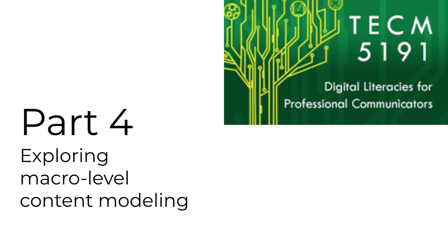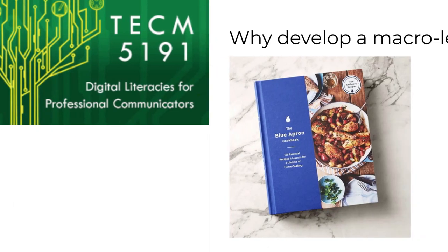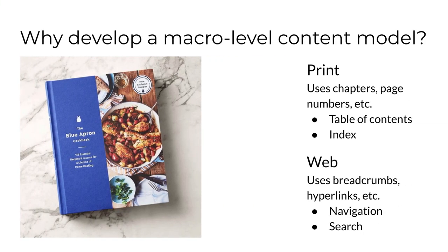Having well-structured individual topics is only part of the structure you need to develop for your content. In Part 4, we continue talking about structured content but explore the practice of modeling content at a macro level instead of at the individual topic level. A complete content model tells you how all of your individual topics fit together. Think about a print cookbook — readers can find an angel food cake recipe by using tools like the table of contents. Creating a table of contents requires a model of the content in the cookbook; in other words, the collection of recipes has been sorted into categories. The standard would be to do that by dish type: appetizer, entree, side dish, dessert, and so on.